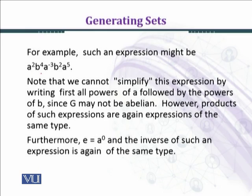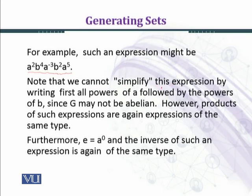For an example, such an expression is a² b⁴ a⁻³ b² a⁵. Note that we cannot simplify this expression by writing all powers of A followed by the powers of B, since G may not be abelian. یہ تب ہی آپ simplify کر سکیں گے اگر G abelian ہوگا تو آپ انہیں commute کر سکتے ہیں۔ تو یہاں پر ہمیں given نہیں کہ G abelian ہے، اس لیے آپ a² اور b⁴ کو commute نہیں کر سکتے۔